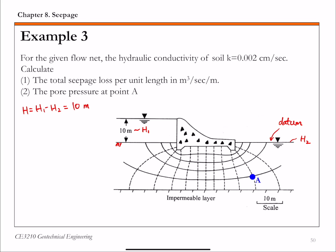And also given this flow net, we can get the number of flow channels we call NF. And for this flow net, if we count this 1, 2, 3, 4, and 5. So the number of flow channel NF is 5.